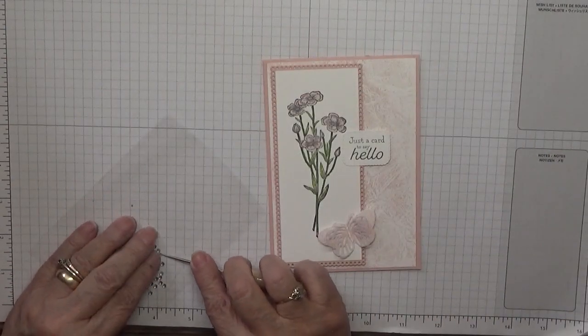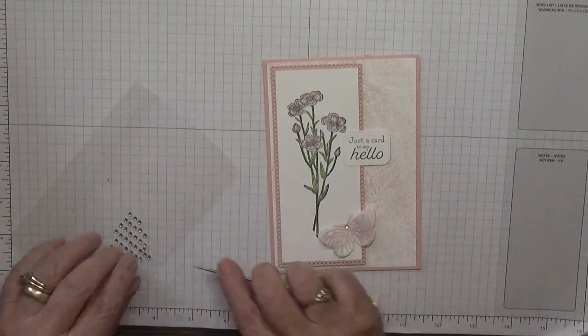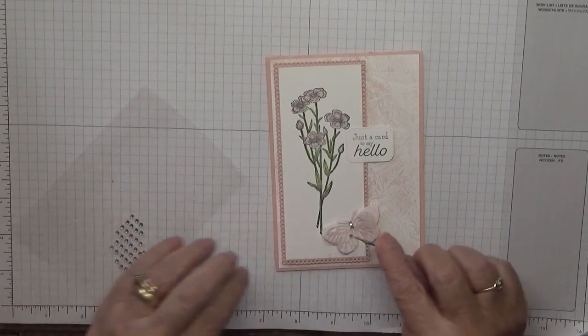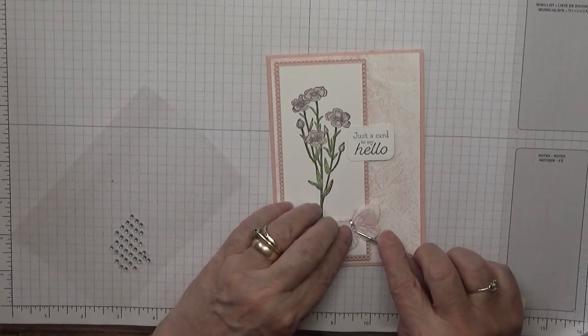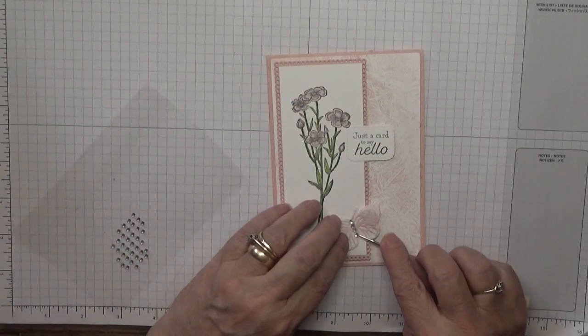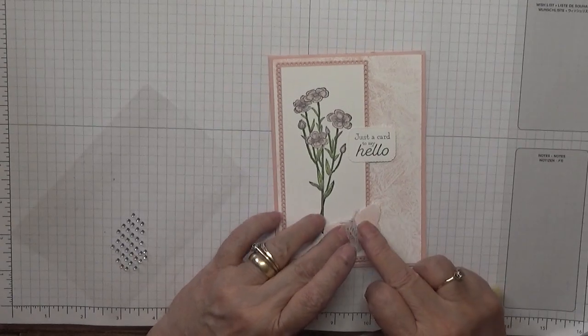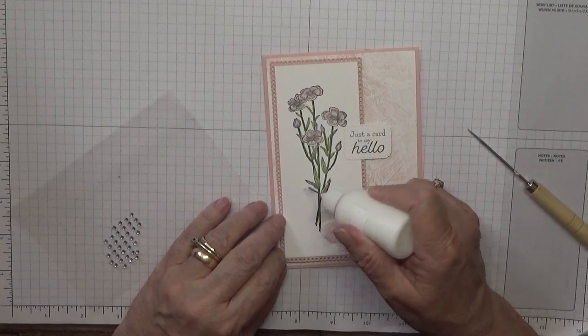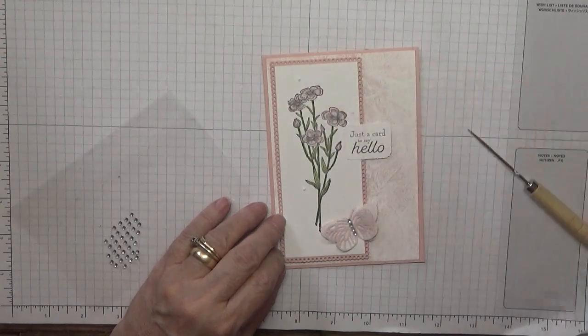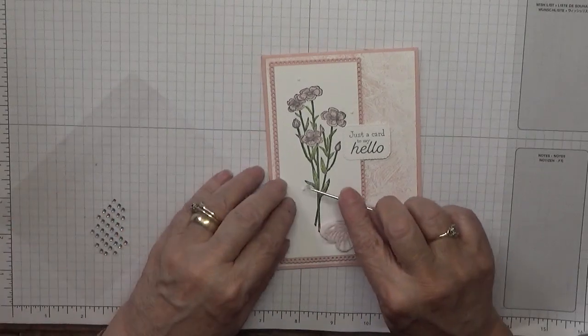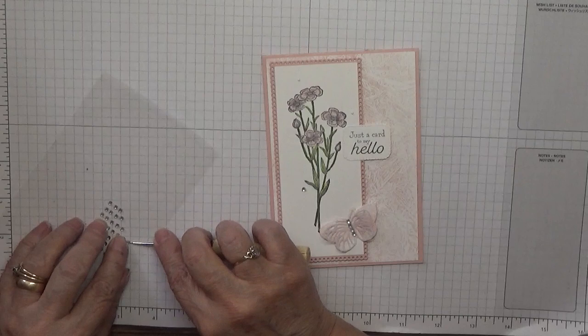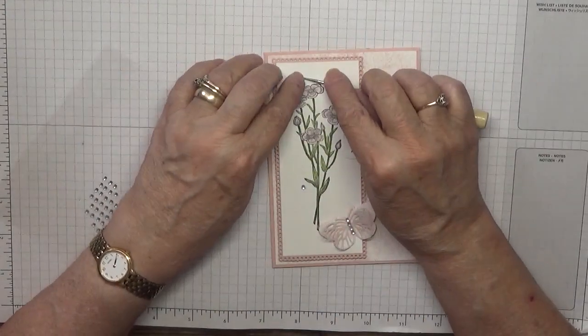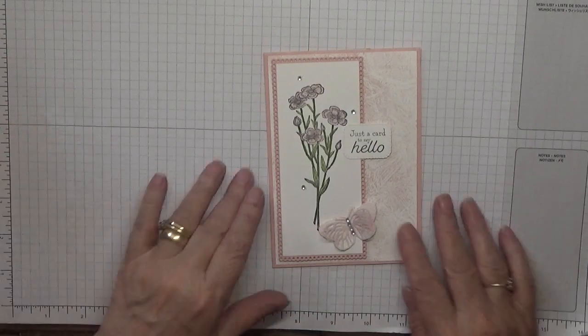And that is just going to sit down there. I'm going to put a little glue down there because we are going to add some gems. I think I can get four on here. Put them close enough together. And then three round the edge. Like that. And that is our card done.